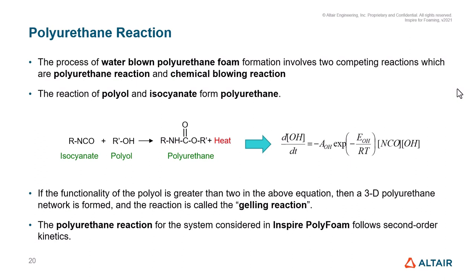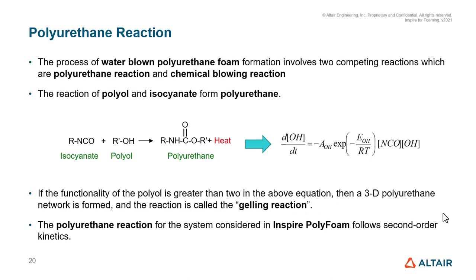Here you can see that isocyanate reacts with polyol and releases a lot of energy. The reaction follows a typical Arrhenius path. If the functionality of the polyol is greater than 2, then a 3D polyurethane network is formed and the reaction is called the gelling reaction. The polyurethane reaction for the system considered in Inspire Polyfoam follows second-order kinetics.